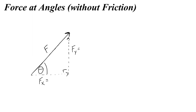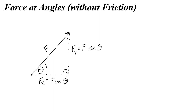To figure out what these are equal to, we treat this like a right triangle, where the y component is opposite the angle and the x component is adjacent. To find the y component's magnitude, we take the hypotenuse — the magnitude of the applied force — and multiply by sine of the angle theta. For fx, we take the magnitude F and multiply by cosine of the angle theta.